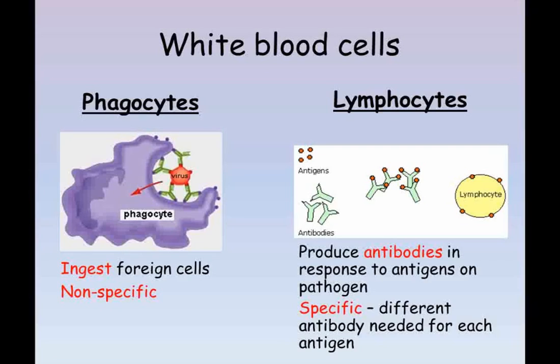The second type of white blood cell are called lymphocytes. Every cell has certain molecules on its surface that are specific to that type of cell. These are called antigens and can be used to recognize particular types of cell. Lymphocytes produce molecules called antibodies that attach to these antigens, and the cell with the antigen that fitted the antibody is then destroyed. Because antigens are specific to the type of cell they are found on, they each require a different type of antibody. If your white blood cells are unable to produce an antibody that fits the antigen of a pathogen, it will not be recognized and will not be destroyed.